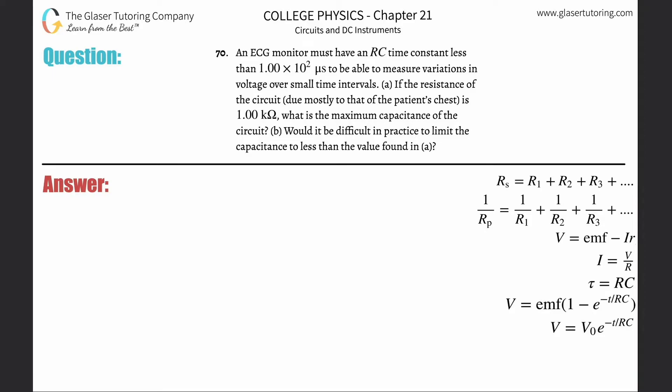Number 70. An ECG monitor must have an RC time constant less than 1 times 10 to the 2 microseconds to be able to measure variation of voltage over small time intervals, letter A. If the resistance of the circuit due mostly to patient chest is 1 kilo ohm, what is the maximum capacitance of the circuit?